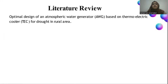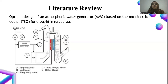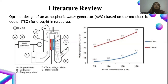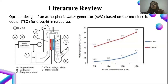We did a literature review. One paper that helped us greatly is titled 'Optimal Design of an Atmospheric Water Generator (AWG) Based on Thermoelectric Cooler for Drought in Rural Areas.' In it, researchers used a PWM controller, ammeter, voltmeter, frequency meters, temperature hygrometer, and a Beckell glass setup. They made a graph showing that air flow rate is directly proportional to water generation — as air flow rate increases, water generation also increases, and they have a linear relationship between them.